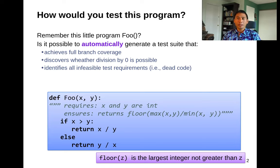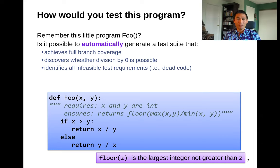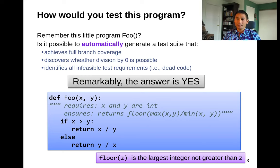Here's a motivating example. Remember there's this program foo that we talked about before — it just does a division. The question, and this is a rhetorical question, is: can we automatically generate a test suite that achieves full branch coverage, discovers whether division by zero is possible, and identifies all the feasible test requirements like dead code? And the answer is yes. We'll talk about the technique we use to do that.